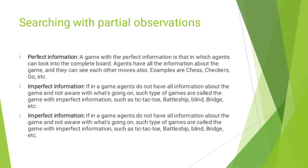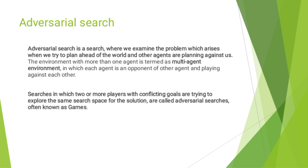What is Adversarial Search? Adversarial Search is a search where we examine the problem which arises when we try to plan ahead in the world with other agents or planning agendas. The environment with more than one agent is termed as a multi-agent environment in which each agent is an opponent of other agents and playing against each other. Searches in which two or more players with conflicting goals are trying to explore the same search space for the resolution are called Adversarial Searches.